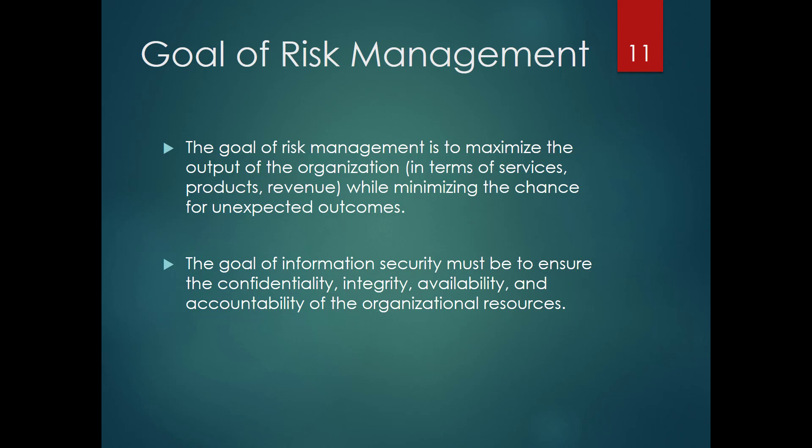Here we have the goal for risk management, and it's tied to business values. What we're trying to do is maximize our output while minimizing the chance for unexpected outcomes. Whereas the goal of information security is tied back to the confidentiality, integrity, availability, and accountability of organizational resources. While most organizations have an information security office, more and more are also having a risk management office, with tight collaboration between the two because they do cross over.